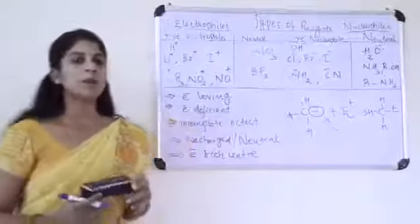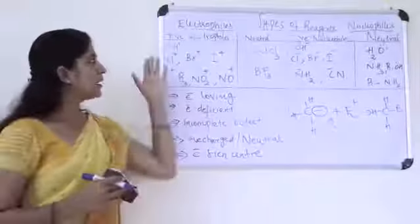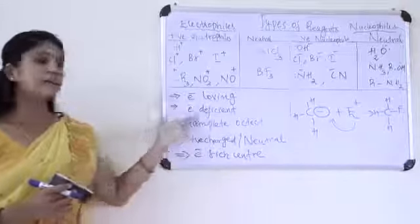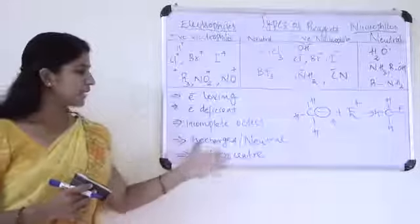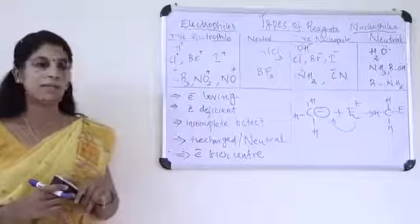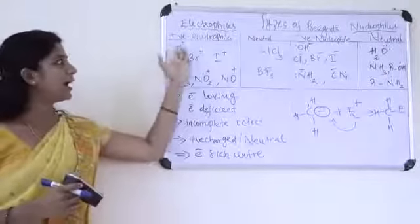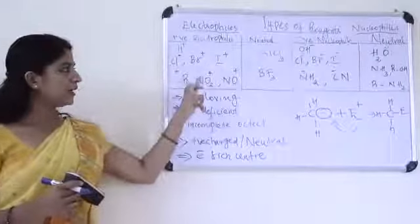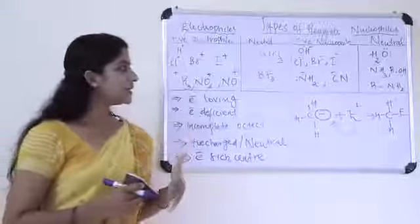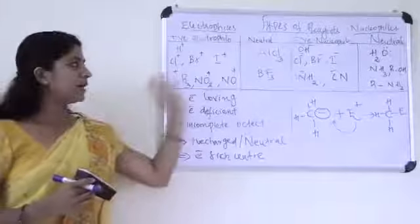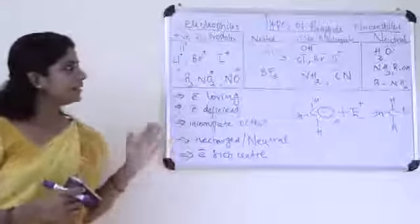So what are the properties of an electrophile? Electrophiles are positively charged or neutral species. They are electron loving in nature. They are electron deficient in nature. They have incomplete octets. Examples include H plus, Cl plus, Br plus, I plus, CH3 plus carbocation, nitronium, nitrosonium, and electron-deficient AlCl3 and BF3.